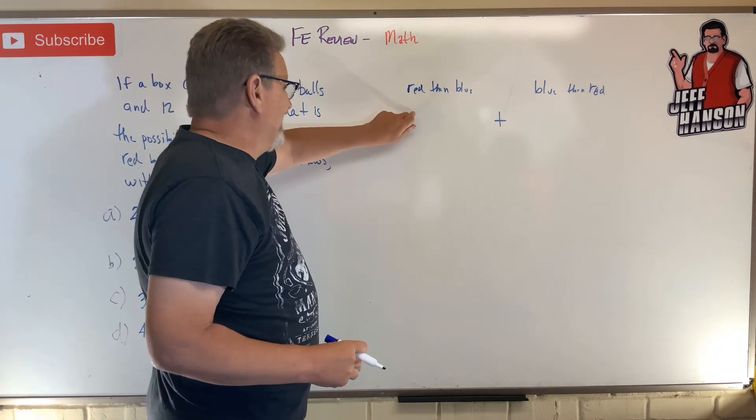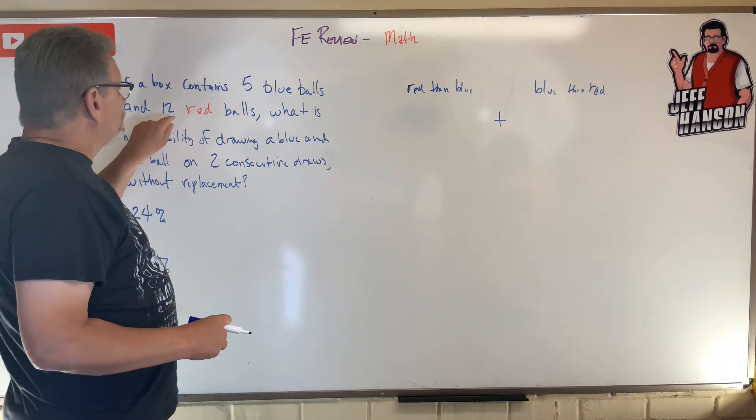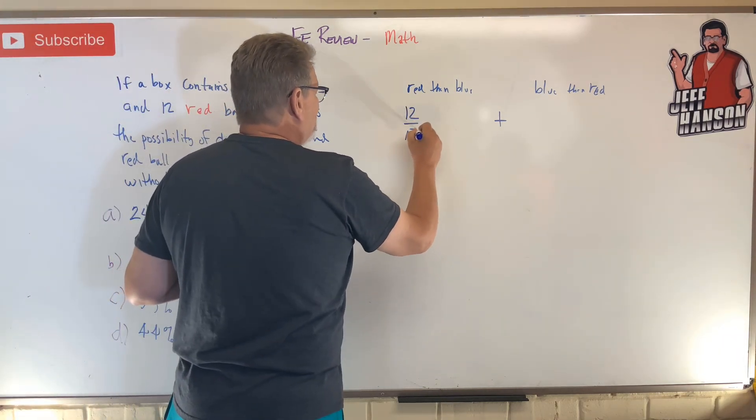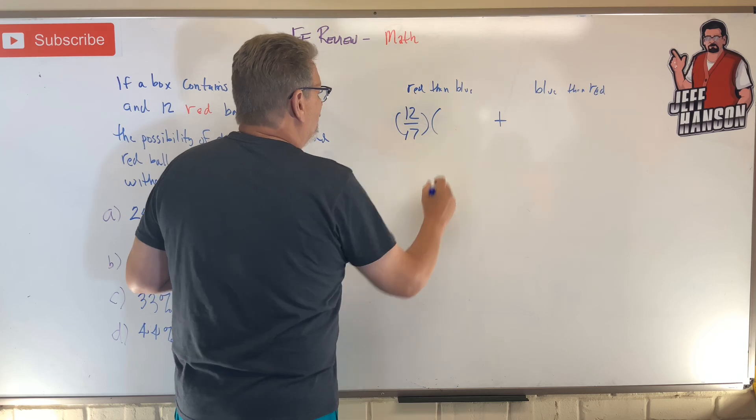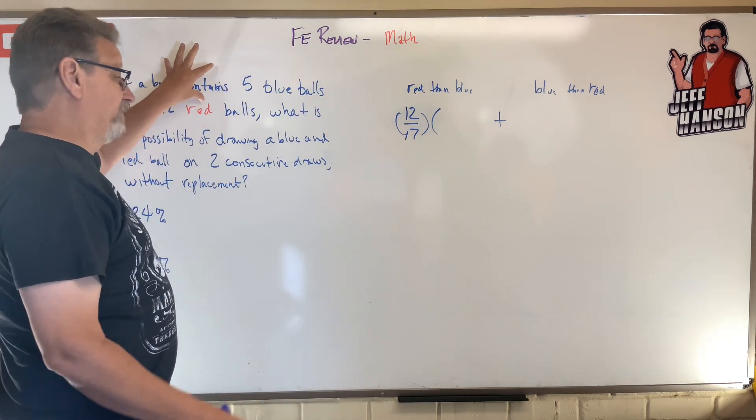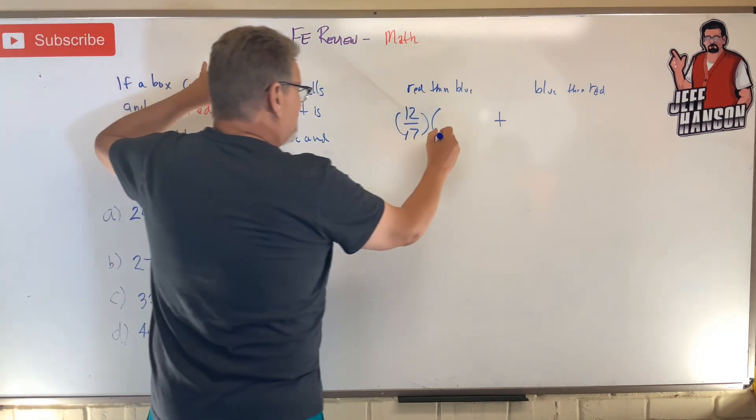So red then blue. To get red out first, there are 12 red balls out of a total of 17, so you have 12 out of 17 chance to get that. Then you have to multiply that by what's the chance to get the blue ball next. Well, we don't have 17 anymore, now we have 16.